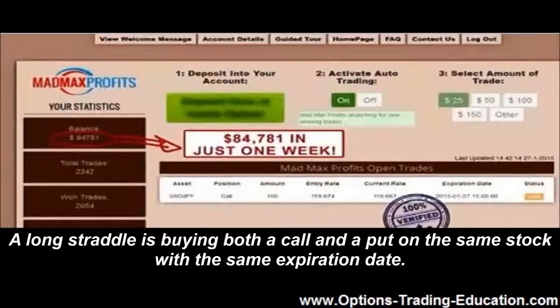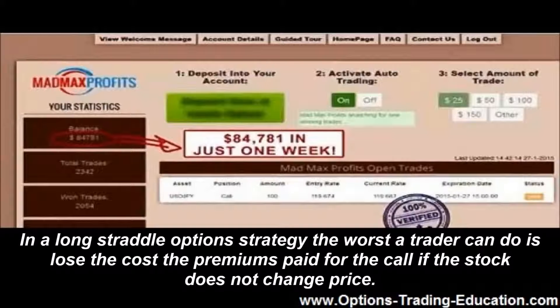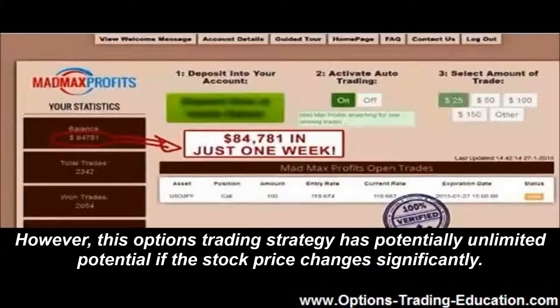A long straddle is buying both a call and a put on the same stock with the same expiration date. In a long straddle option strategy, the worst a trader can do is lose the cost of the premiums paid for the call if the stock does not change price. However, this options trading strategy has potentially unlimited potential if the stock price changes significantly.